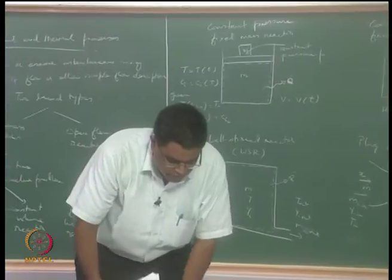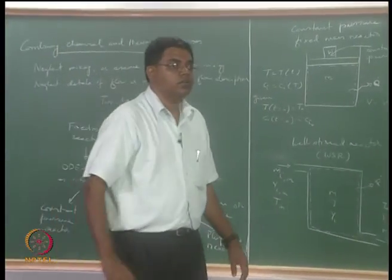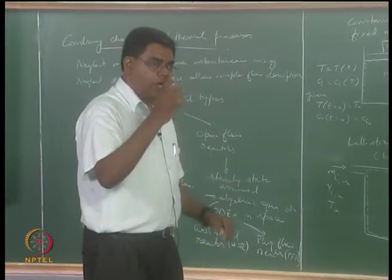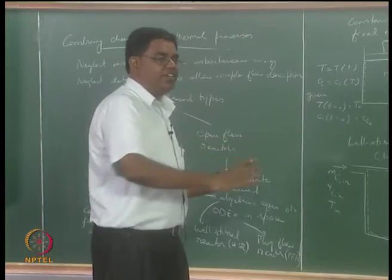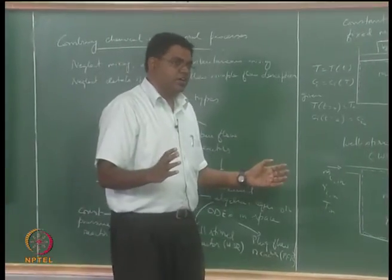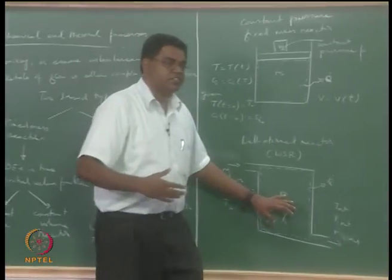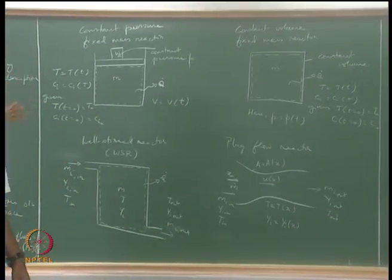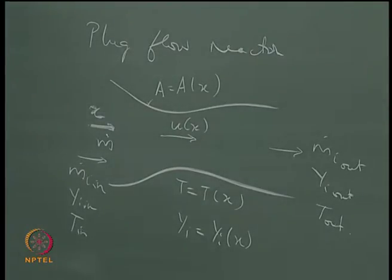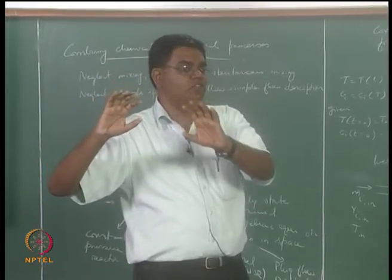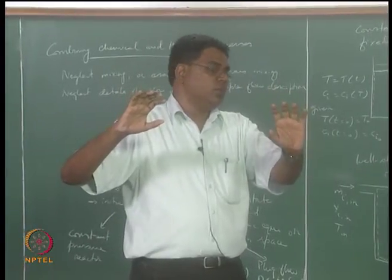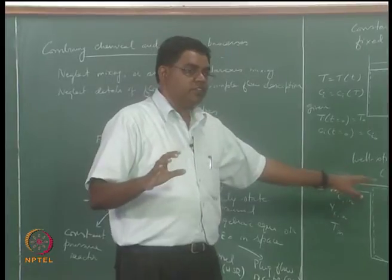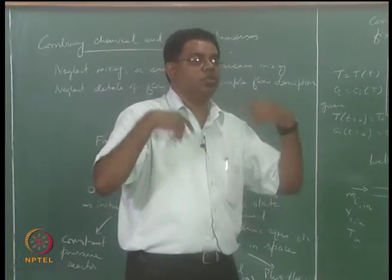The combustor used in aircraft is a combination of about two or three WSRs and plug flow reactors put together in a network. You could model a combustor that way if you do not want to get into the actual physical details. The primary zone is one WSR, the secondary zone is another WSR, and the tertiary dilution zone could be a plug flow reactor or WSR depending on whether you want the spatial variation or not. These models serve as building blocks to create a network that simulates the reality.